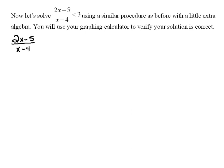So here's my original problem, less than 3. We are going to subtract 3 from both sides so that we can move that 3 over. So now we have 2x minus 5 over x minus 4 minus 3 is less than 0.